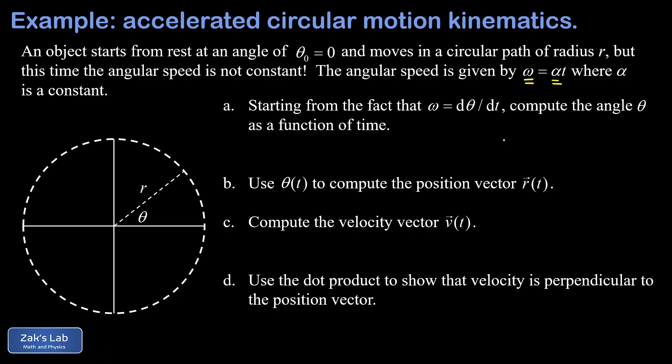After we derive the equation for the position vector and the velocity vector, there's a little bonus question here, where we use the dot product to show that the velocity and position vectors are still perpendicular, even when the angular speed is changing. So we're guided through the derivation step by step.